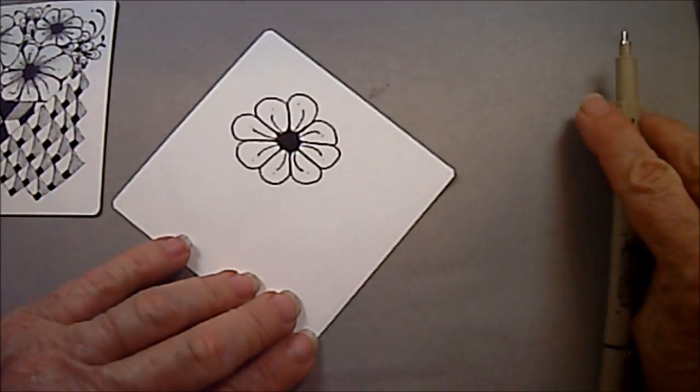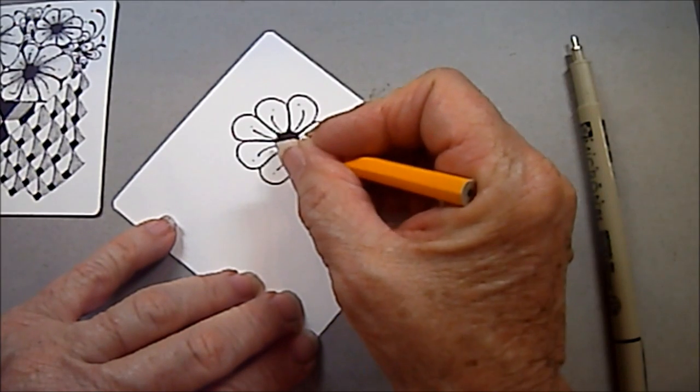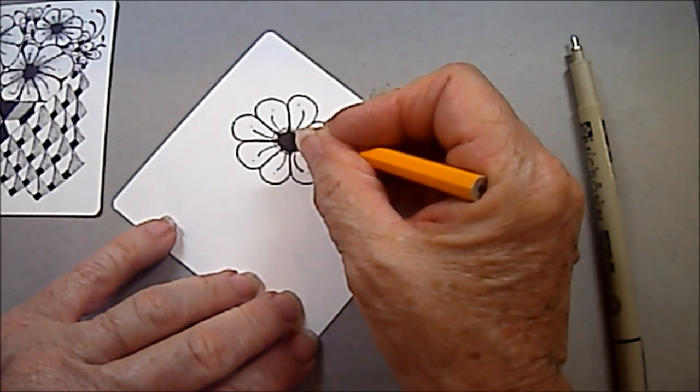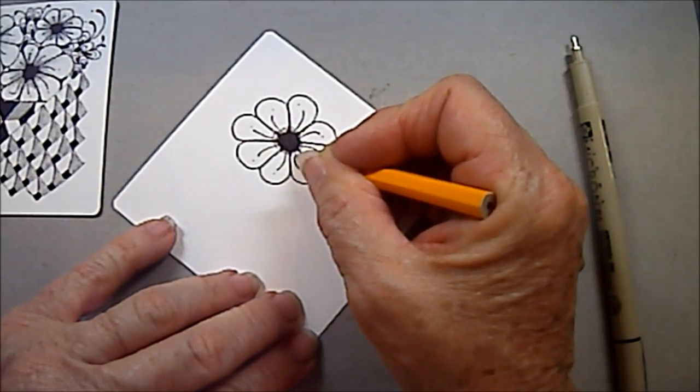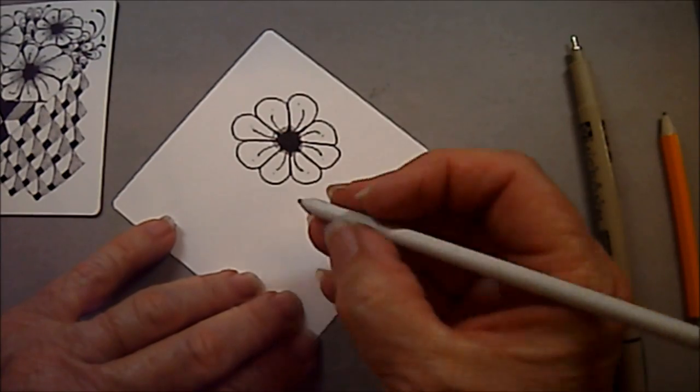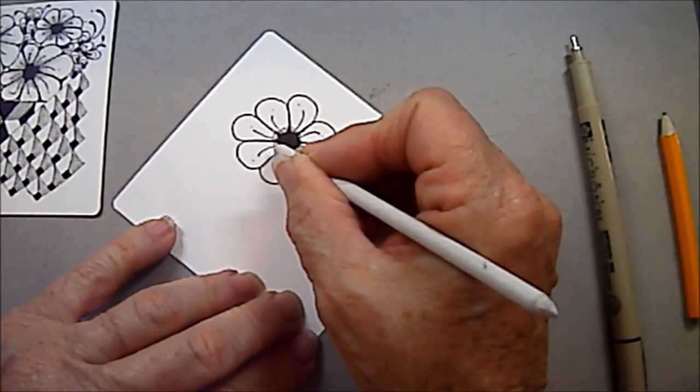Now I can take my pencil, and I can put a little bit of graphite right down here in the bottom, right next to the black of my Joyful. And then blend it out with my shading stump.